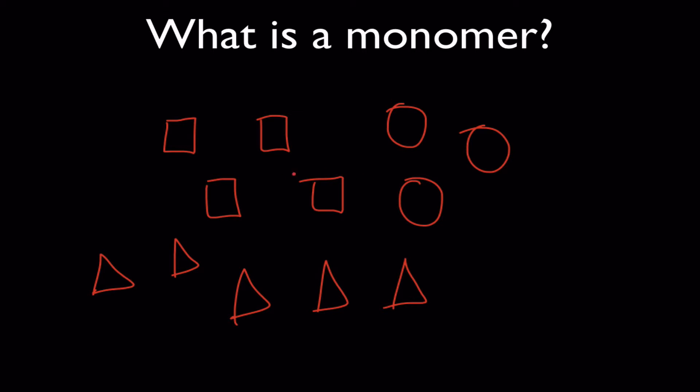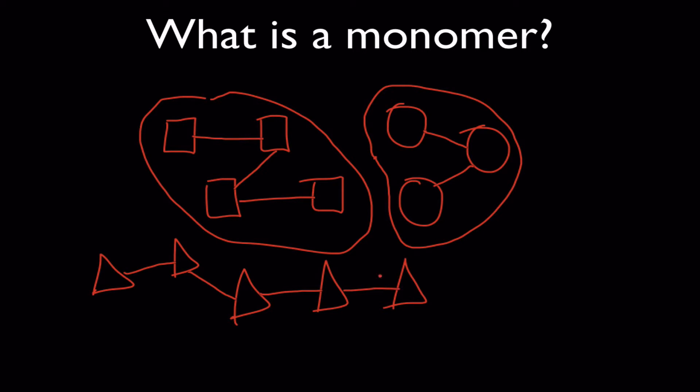Now, if you want to turn them into a polymer, what you do is you hook them together. So if I bonded this one to this one, this one to this one, and this one to this one, I have what's now known as a polymer. You make polymers by hooking together monomers.